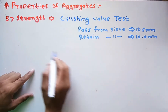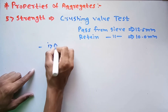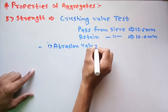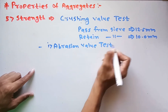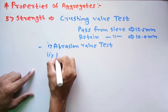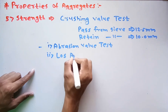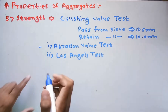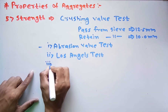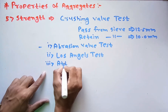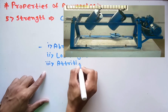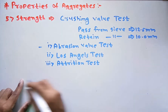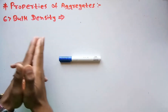Along with the crushing value test, we also perform the abrasion value test, the Los Angeles test, and the attrition test. We will discuss these tests later. This covers the important strength property of aggregates.